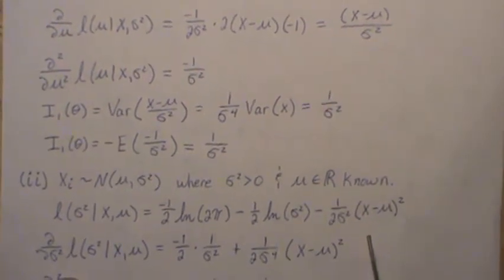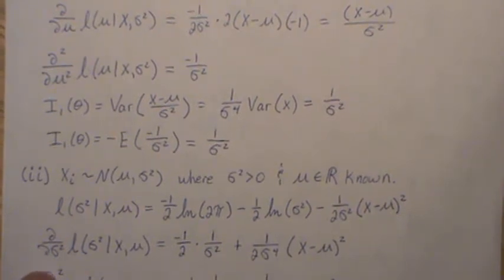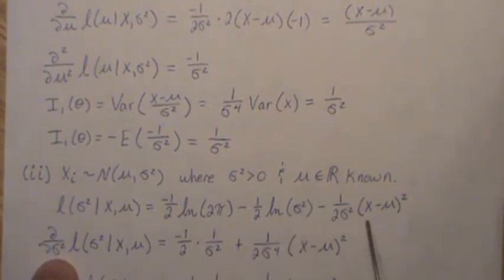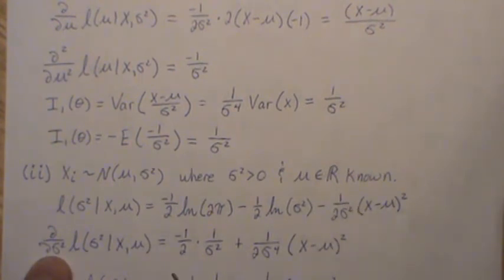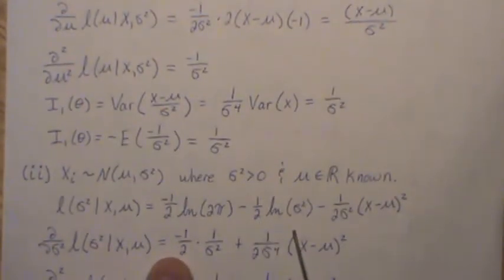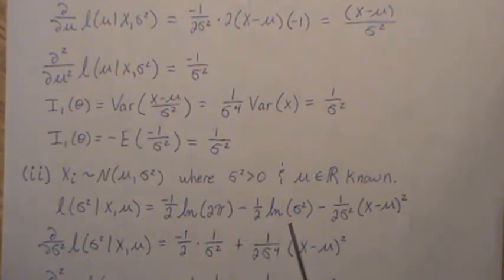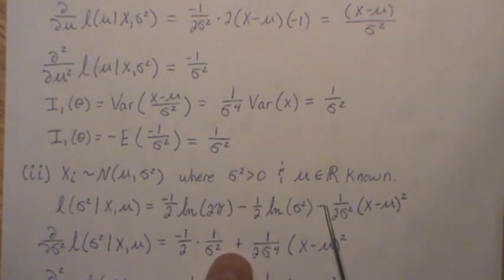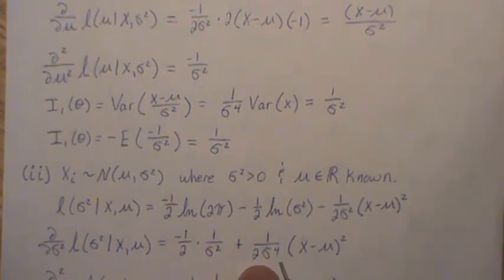For the derivative with respect to sigma squared — one trick is to replace sigma squared with theta, take the derivative with respect to theta, which makes it clearer. The first term: minus one-half comes out front, and it's one over sigma squared times the derivative with respect to sigma squared, which is one. For the second term, sigma squared to the minus one comes up, the minus one comes out, changes the exponent, giving sigma squared to the fourth. Now for the second derivative with respect to sigma squared: sigma squared to the minus one brings down minus one, giving sigma to the fourth; and the other term follows a very similar technique.